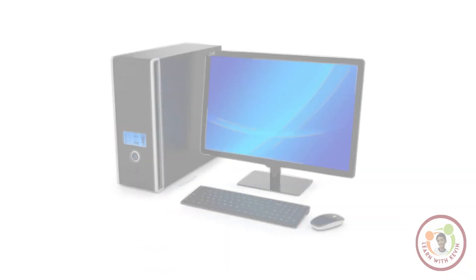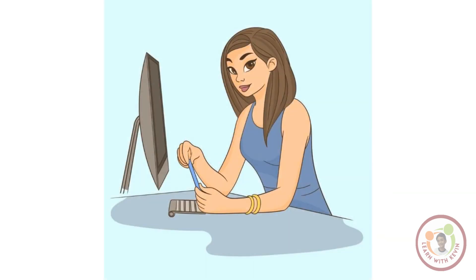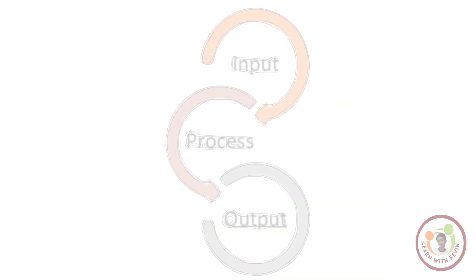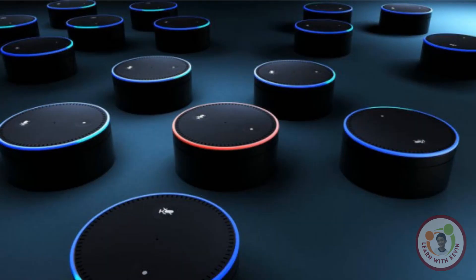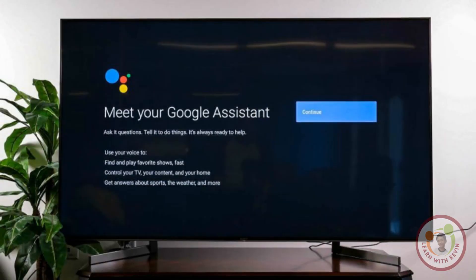Even some refrigerators have computers in them. So a computer is not only the big machine which sits on our desk. A computer can be in any form which gets our input, processes the given input, and gives back an output — like how we ask Alexa or Google Assistant to play a movie or music and it plays for us on the smart TV.